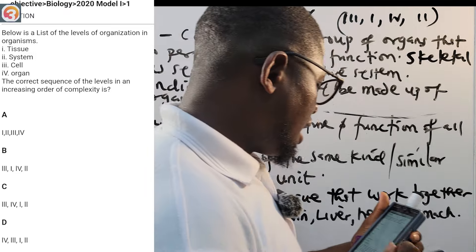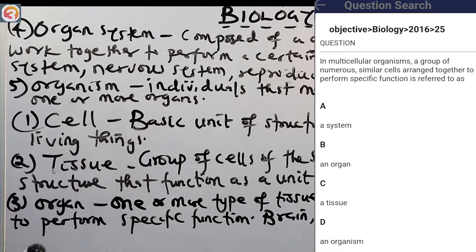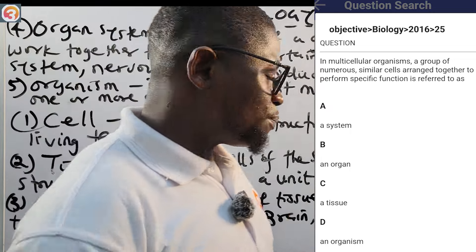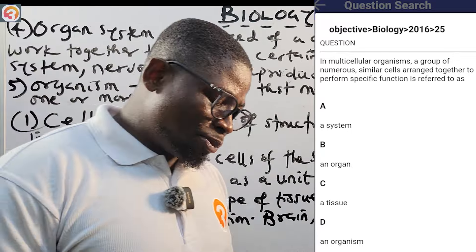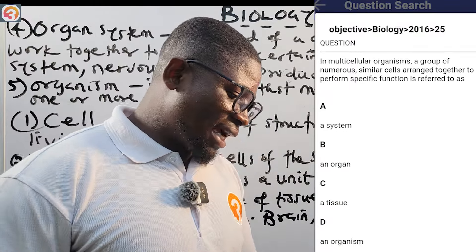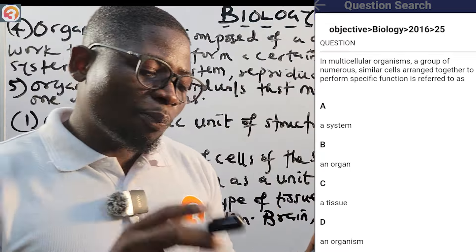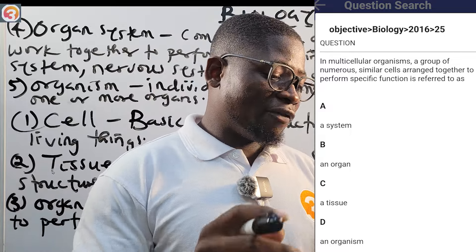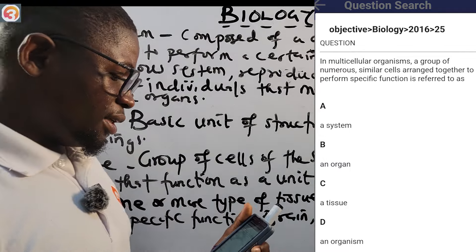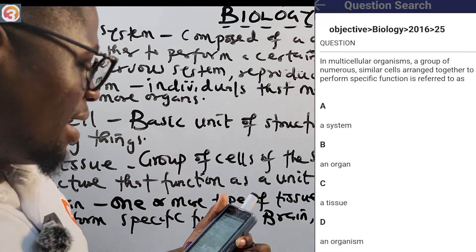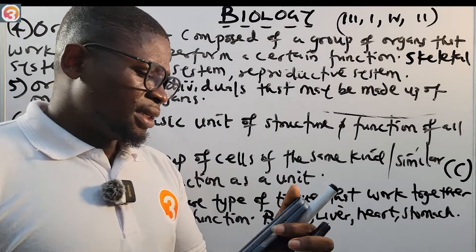Next is 2016 number 25. They say: in multicellular organisms, a group of numerous similar cells are joined together to perform a specific function. The options are: A: cell, B: system, C: tissue, D: organ. Since tissue is a group of cells of the same kind or similar structure that performs a specific function as a unit, the correct answer is option C: tissue.